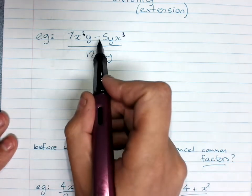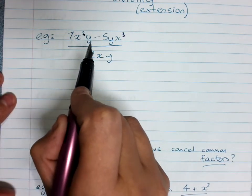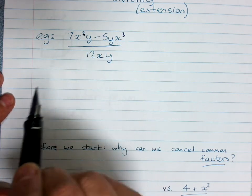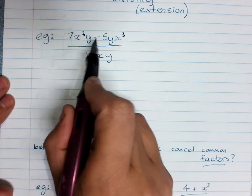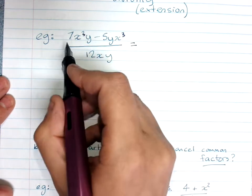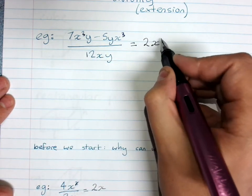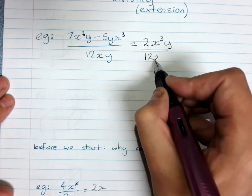So, yes, we can see there's a minus there, which would make you very scared. 7x cubed y minus 5yx cubed over 12xy. But you can check if you can simplify, and these are like terms. Doesn't matter that they're out of order. So, 7 minus 5 means I've got 2x cubed y over 12xy.